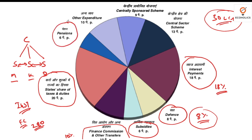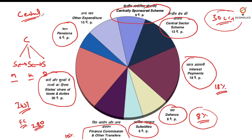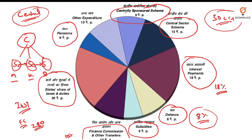Pension accounts for 6% and centrally sponsored schemes get 9%. Central sector schemes are carried out entirely by the central government — implementation and policy making depend on the center. Centrally sponsored schemes, like MGNREGA, are drafted by the center but implemented by the states. Money comes from the center but implementation is by state governments.